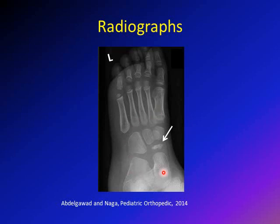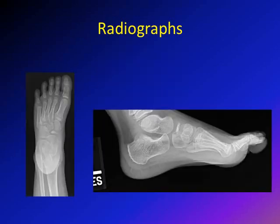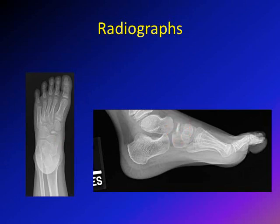The radiograph will show the disease clearly. Here the navicular bone is flattened and sclerotic, which is an indication of Kohler's disease. In another example — a boy presenting with foot pain — the X-rays show the navicular collapsed and fragmented, with the medial cuneiform and talus visible alongside it. The lateral view also shows collapse of the navicular bone.